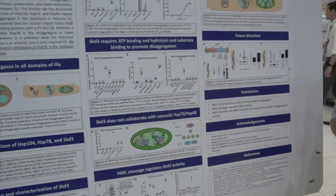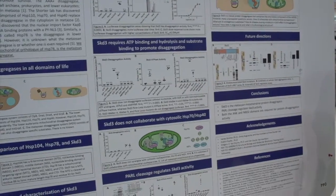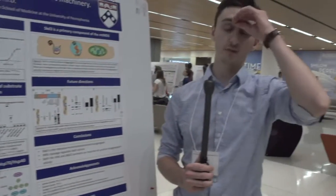There's no known human mitochondrial protein disaggregase to date, so I've purified a protein called SCID-3 that I hypothesized was the human mitochondrial protein disaggregase. What we found is that it is in fact the human mitochondrial protein disaggregase, and its activity is regulated by the mitochondrial protease named PARL.